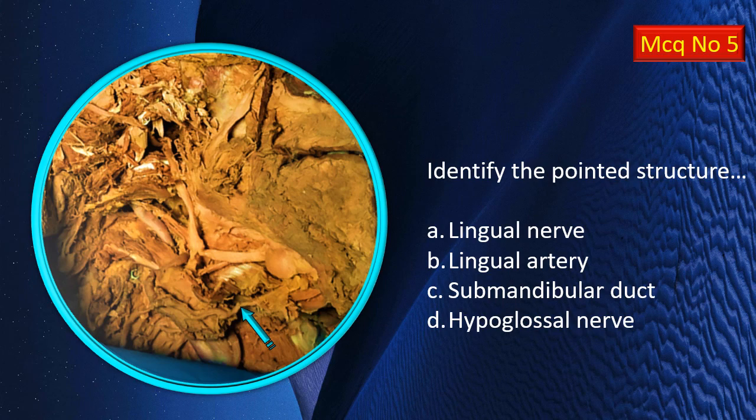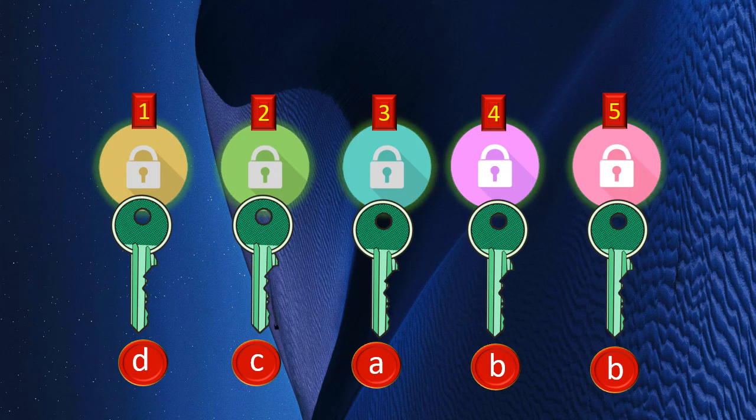The answers appear on the immediate next screen. Before checking, make a clear decision — it is the decision-making process that is most important to develop across the MBBS course. Take a clear decision, then check whether you were right or wrong. All answers are provided; students are advised to freeze the video, wait as long as needed, cross-check, and then proceed.